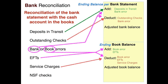NSF checks are checks you received in payment from clients or customers for products or services, and when you took it to the bank it didn't clear. When you received the check you likely recorded it as payment and cleared their accounts receivable. Now you find out they actually haven't paid you and your cash account didn't go up. It's an adjustment to the book side and a deduction, because you originally recorded it as an addition to cash but the check was bad.